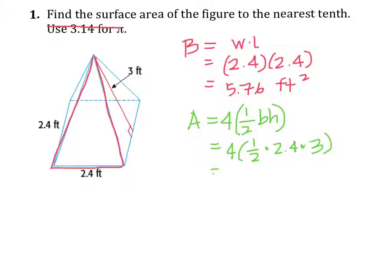So four times a half times 2.4 times 3 is about 14.4, exactly 14.4. So we know that our surface area is equal to the area of the base plus four times the area of, sorry, I already did four times, so let's get rid of that, plus the surface area of each of those four triangles.